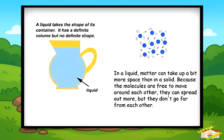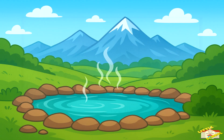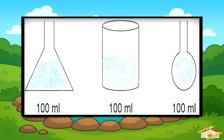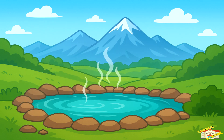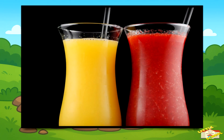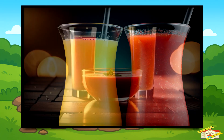Even though liquids don't have a fixed shape, they do have a fixed volume. That means the amount of space the liquid takes up doesn't change. A cup of juice is still a cup of juice whether you pour it into a tall glass or a wide bowl.